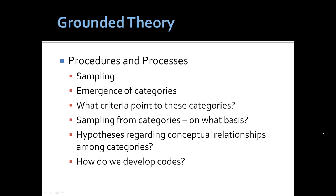In grounded theory, sampling begins with an observation, but then the researcher selects based on theories or hypotheses about the observations. As concepts and categories emerge, these inform future observations or future sampling. What are the criteria for these categories? How do we sample future behaviors that expand on the behavioral examples and concepts under the umbrella of the category? What conditions might give rise to an increase or decrease in behaviors and concepts in the category? And most importantly, how do we develop codes for present and future use?